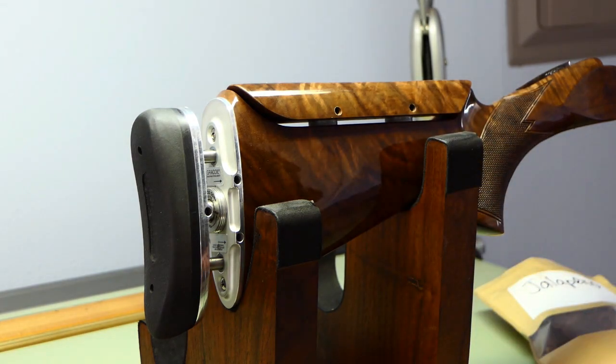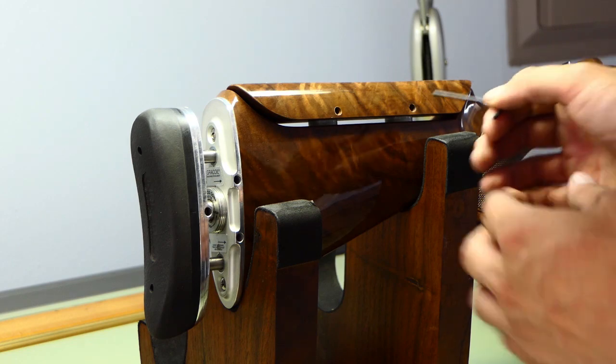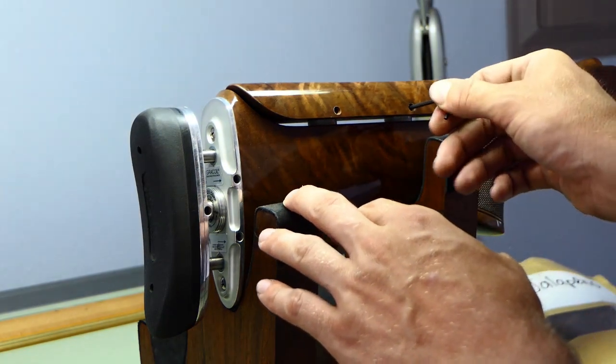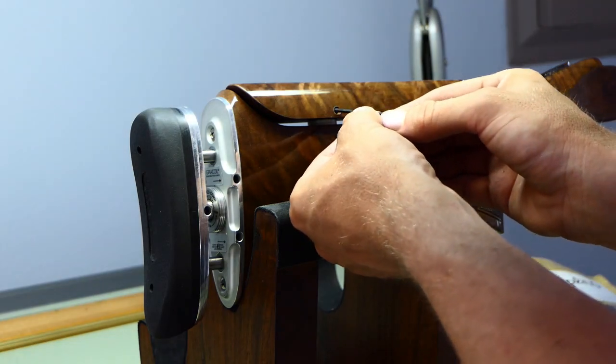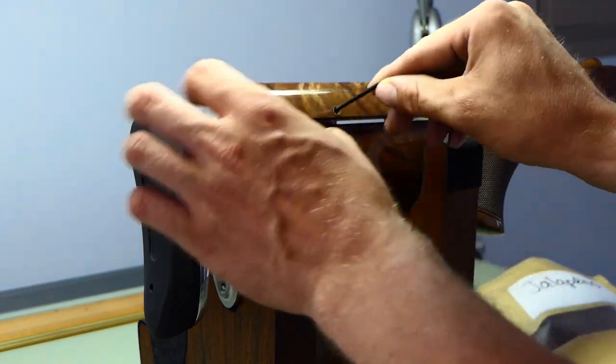So to begin I'm going to remove my comb. I'm going to use my 3/32nd Allen wrench by simply loosening these two screws that are accessible through the side of the comb.